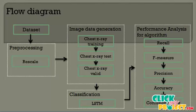The flow diagram of the project begins with input image data from the dataset. In the preprocessing method, we resize the X-ray grayscale images and forward them into image data generation. In image data generation, we increase the contrast of X-ray grayscale images from testing, training, and validation datasets, and convert all CXR images into arrays.